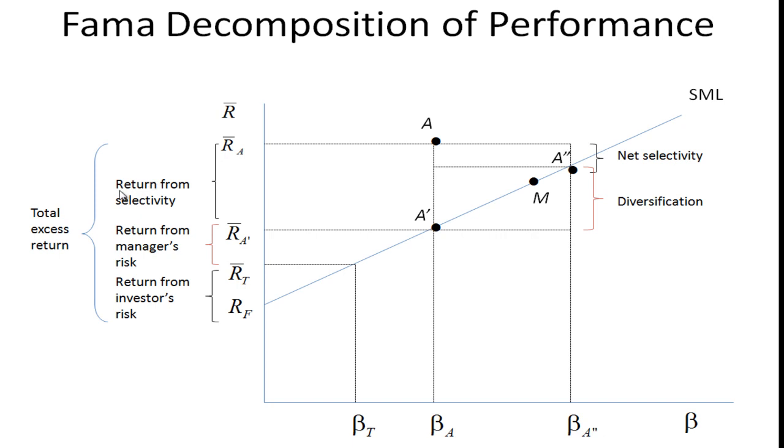Fama breaks that selectivity into two parts. Net selectivity is the extra return you get over taking on this portfolio that has the same total level of risk. And the extra return you get from diversification, or the lack of diversification, the fact that you're taking on more risk.